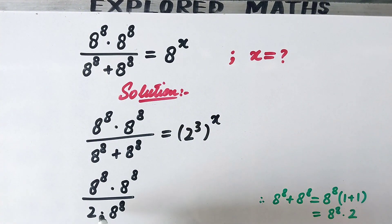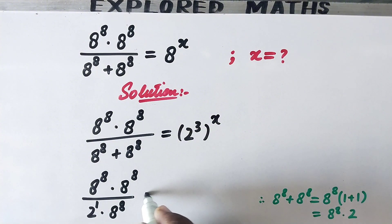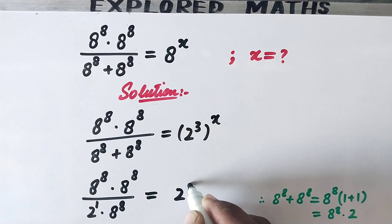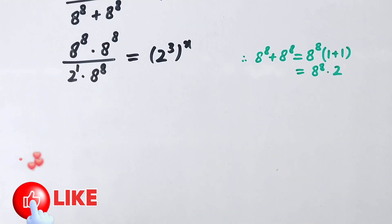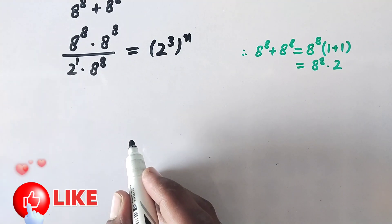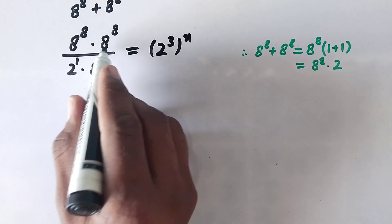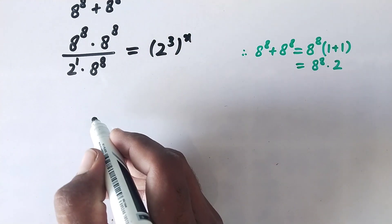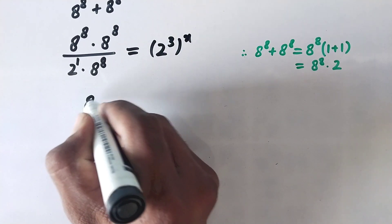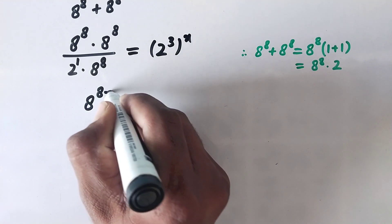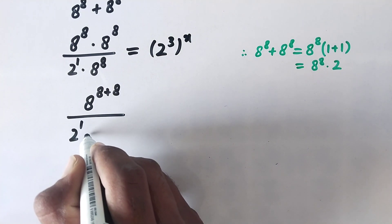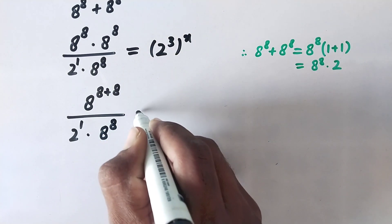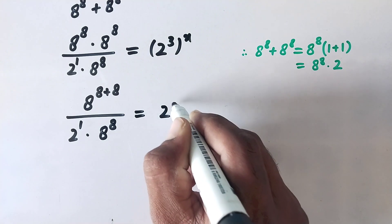So now here we will also take power 1, because 2 to power 1 is the same as 2, and that equals 2 cubed to power x. Now we have 8 to power 8 divided by 2 to power 1 times 8 to power 8, equals 2 cubed to power x.